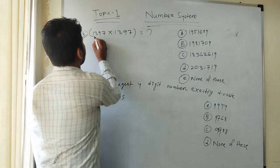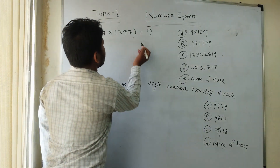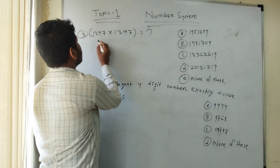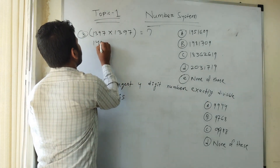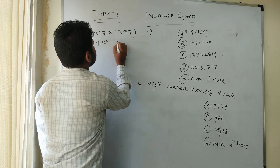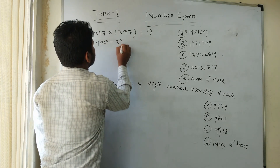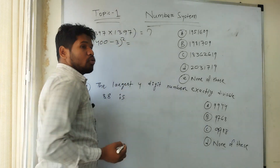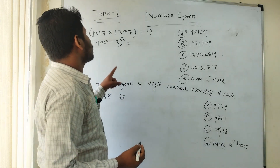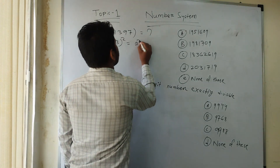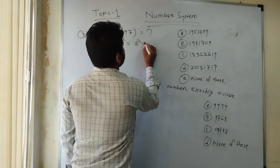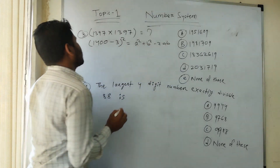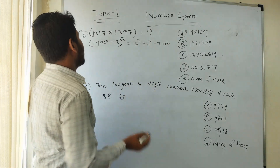Next question 3: 1,397 into 1,397 — how much is it? You can write it like (1,400 minus 3) whole square. You know the formula: A minus B whole square equals A squared plus B squared minus 2AB.